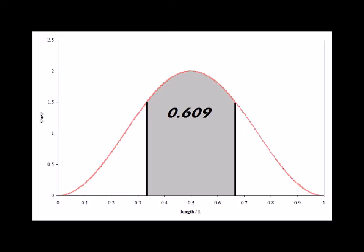If we integrate the probability density from L over 3 to 2L over 3, that will give us the likelihood of finding the particle in the middle third of the box.